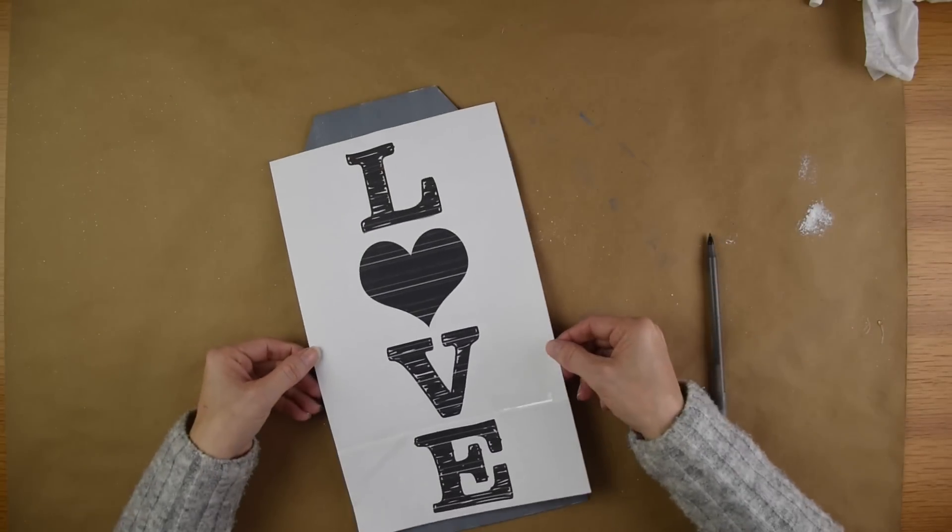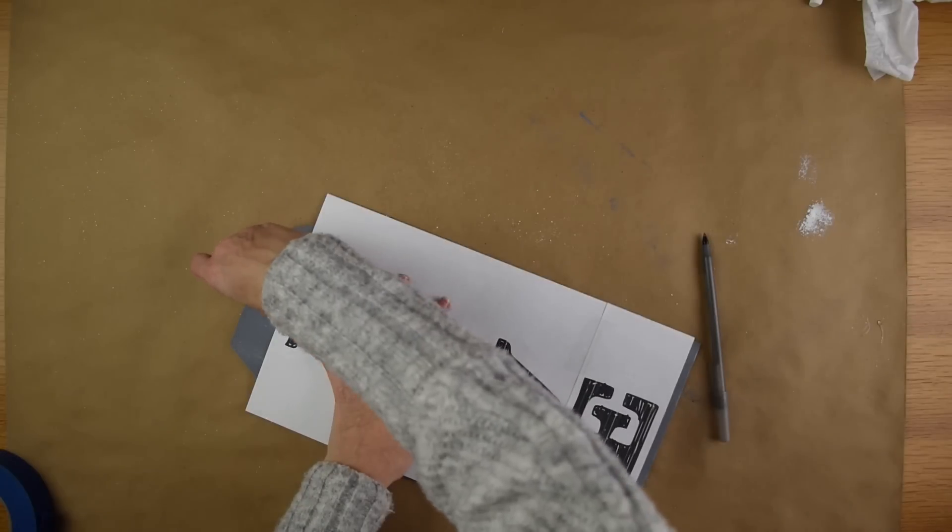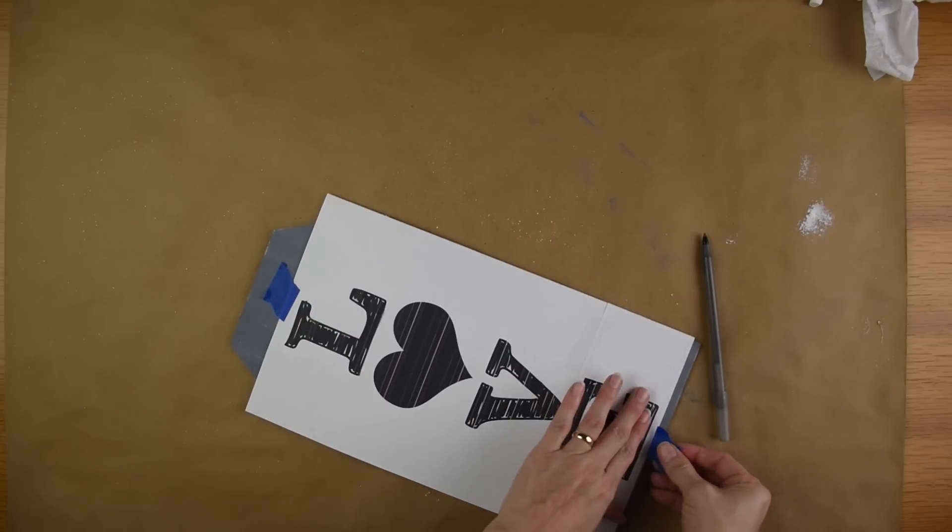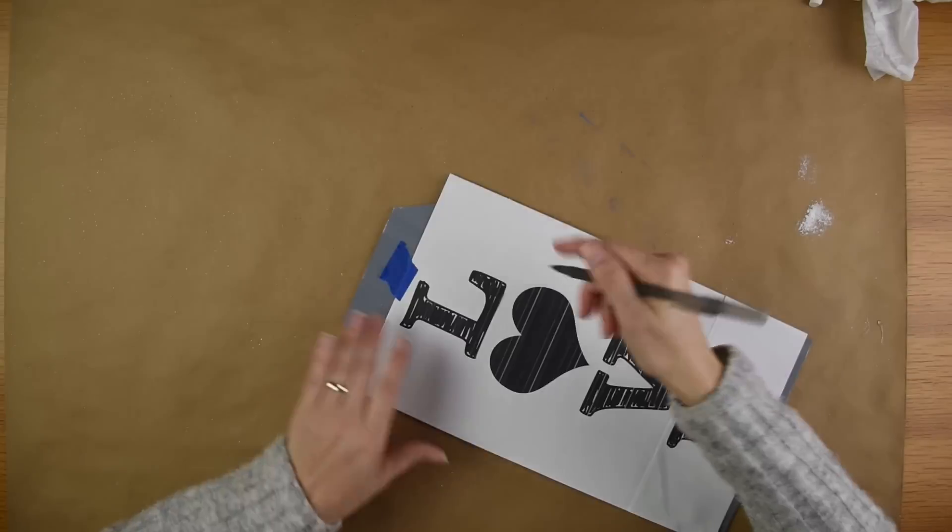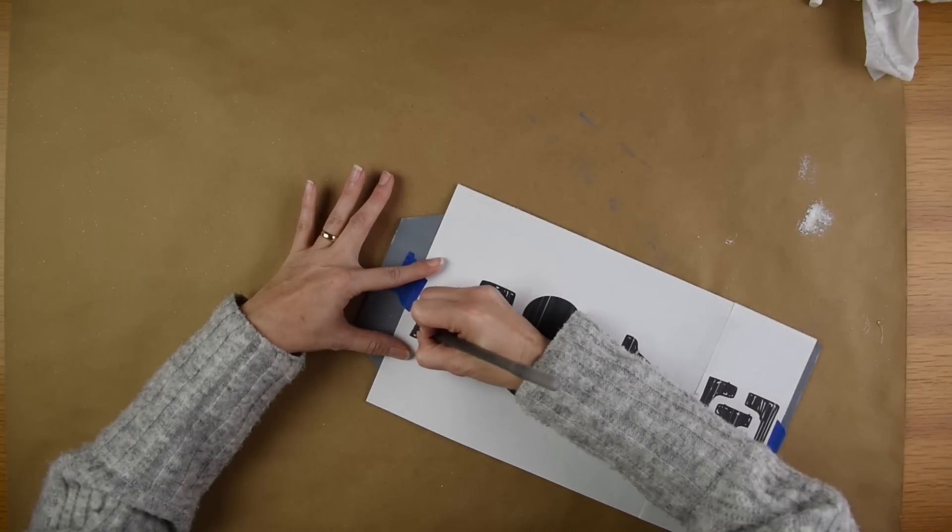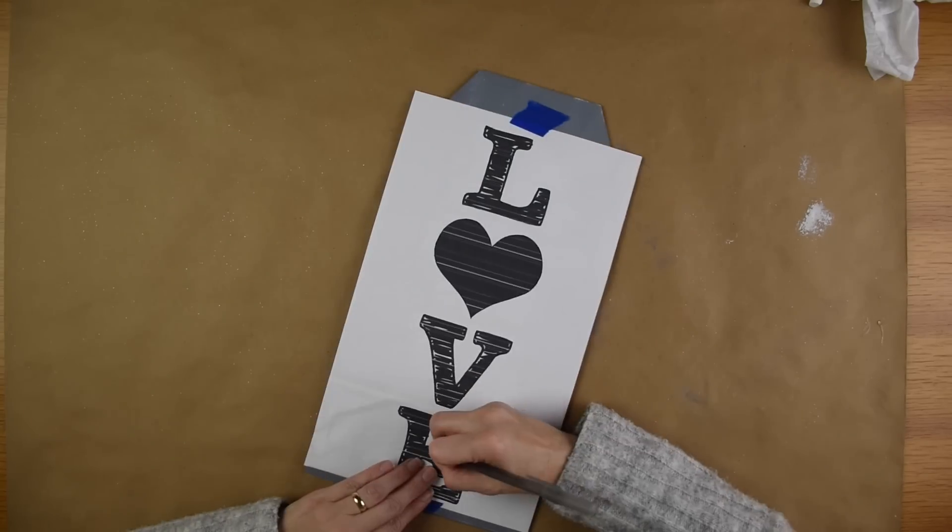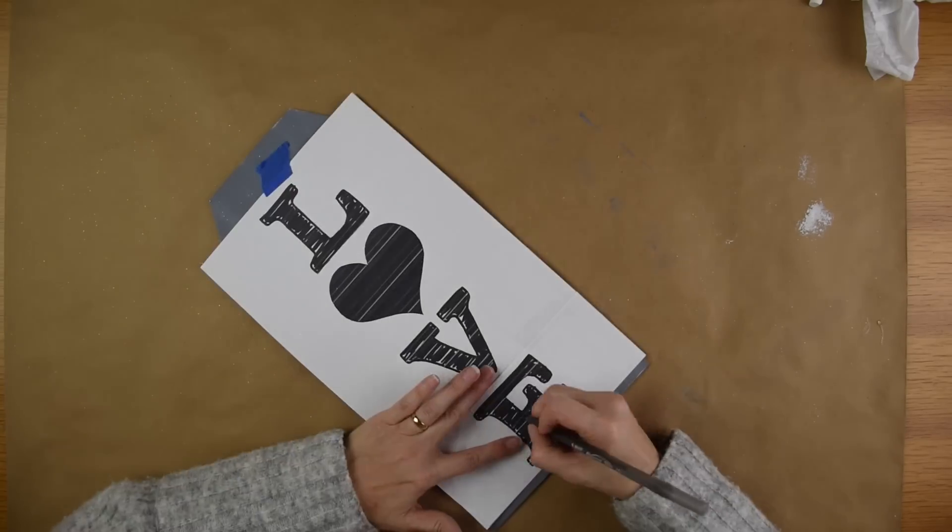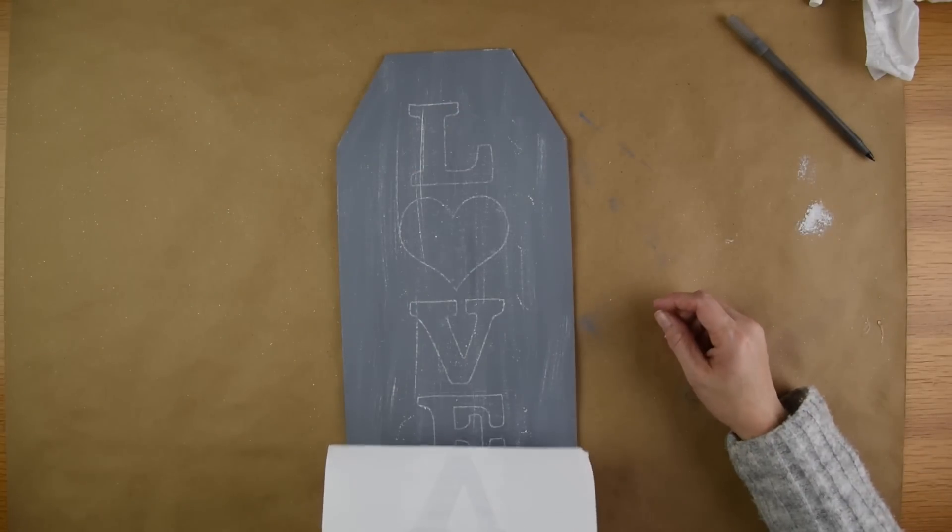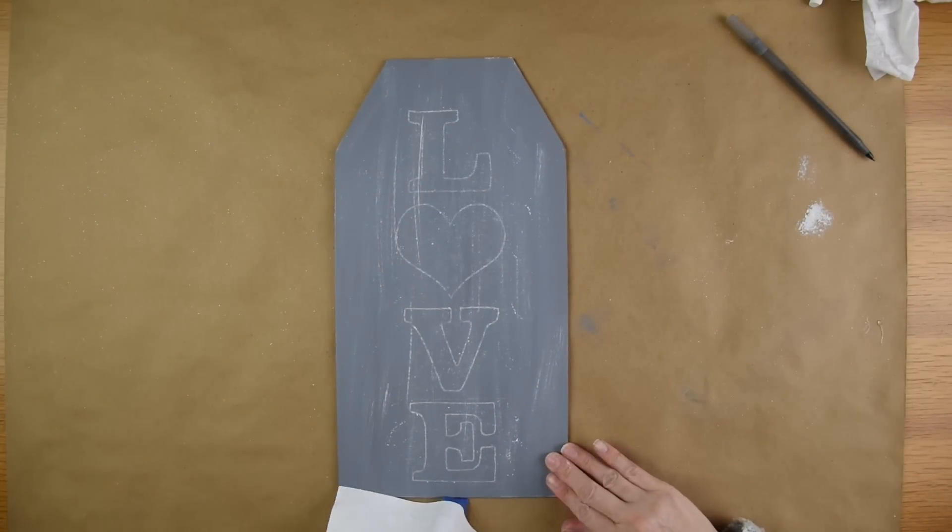Okay so now I'm going to take my printout and put it on top of my wooden sign here. I am going to use a little bit of painter's tape to keep it in place. Now I'm going to take my ballpoint pen and I'm going to go ahead and trace out each letter and heart and when I do this it's actually transferring that chalk onto the board beneath it. So after I'm finished tracing it out I do remove the paper and there is the love transferred onto my board.